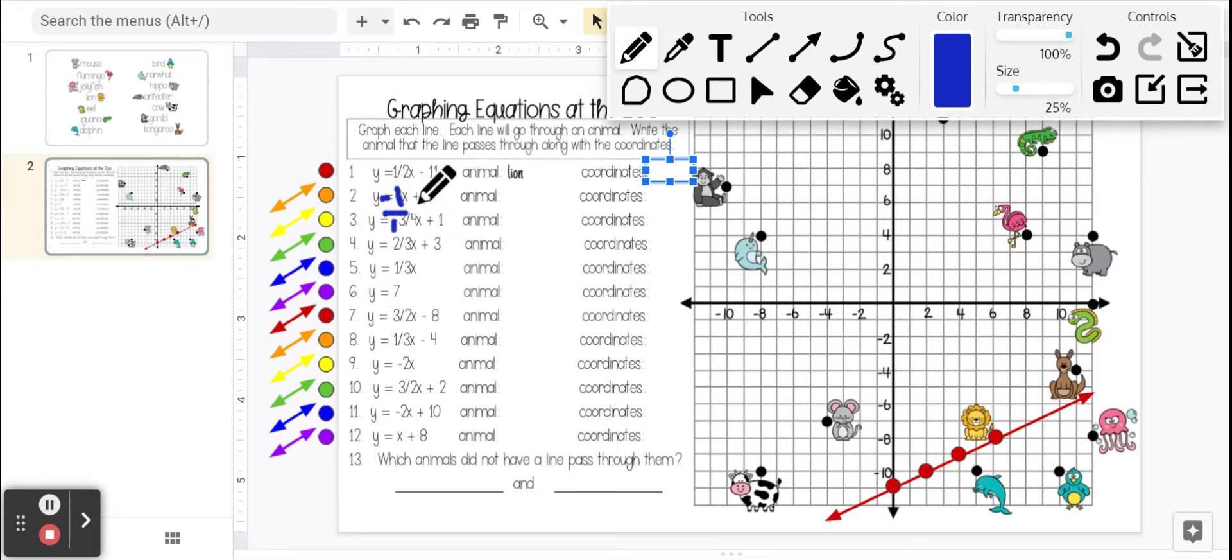So for this one, you're going to start at seven on the y-axis, and then you're going to go down one, right one. Repeat, down one, right one. If there's no number where the y-intercept is, it is zero, because nothing is the same as zero.